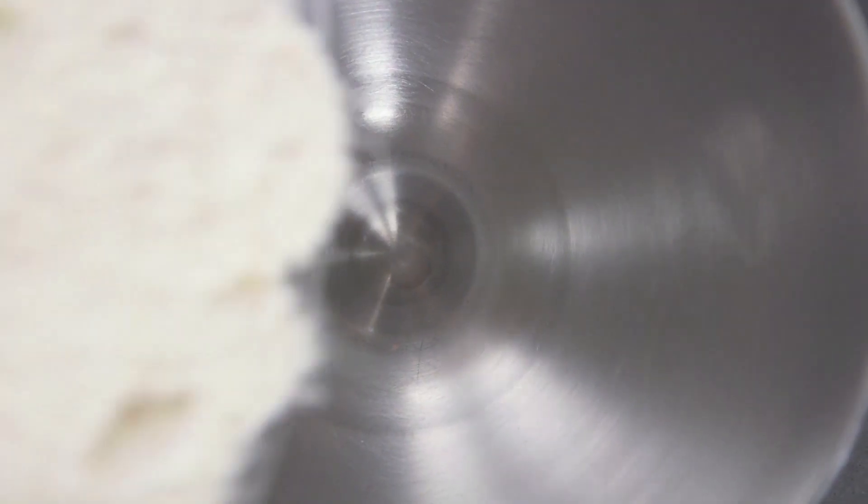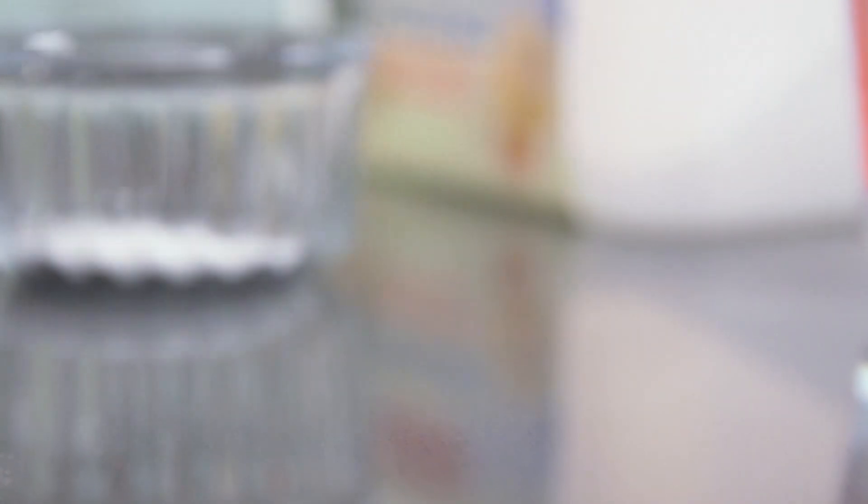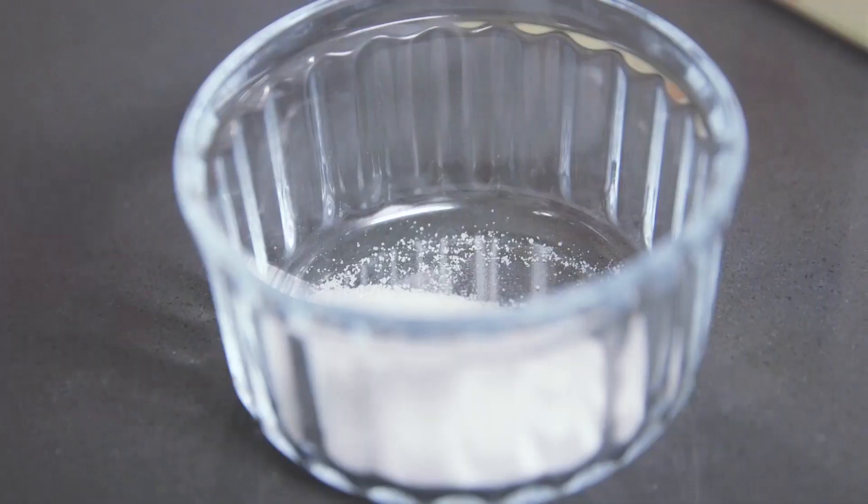Start by weighing the flour into the bowl, then add the salt and yeast to either side so they don't touch, the salt will kill the yeast if they touch each other.